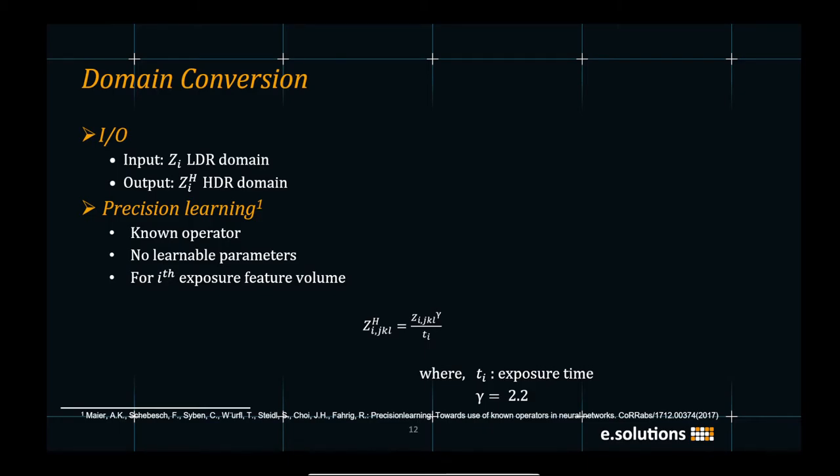The domain conversion module takes the low dynamic range domain input CI and generates the high dynamic range domain output CI. Using the notion of precision learning, the domain conversion can be formulated as a known operator with no learnable parameters. So, for our Ith exposure feature volume, CI is calculated as the division of CI raised to gamma and the exposure time. Here, gamma is set to be 2.2.